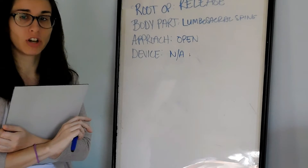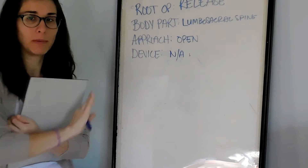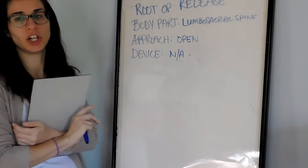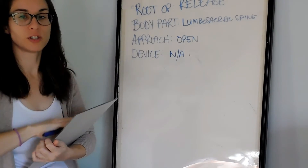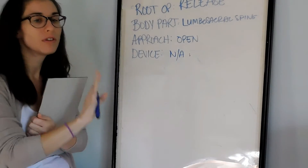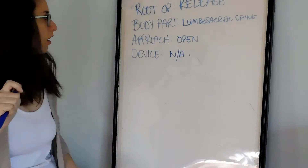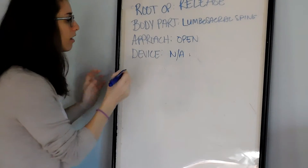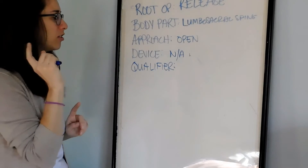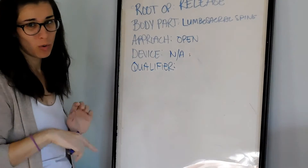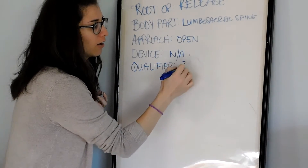I don't know if C-arm fluoroscopy is different from regular fluoroscopic guidance. We are not going to code for the fluoroscopic guidance. In a professional coding setting we would find out more, but for practice purposes, do not code for fluoroscopic guidance at this time. As for the Qualifier column, I'm putting a question mark — I don't know if there will be any further information there.